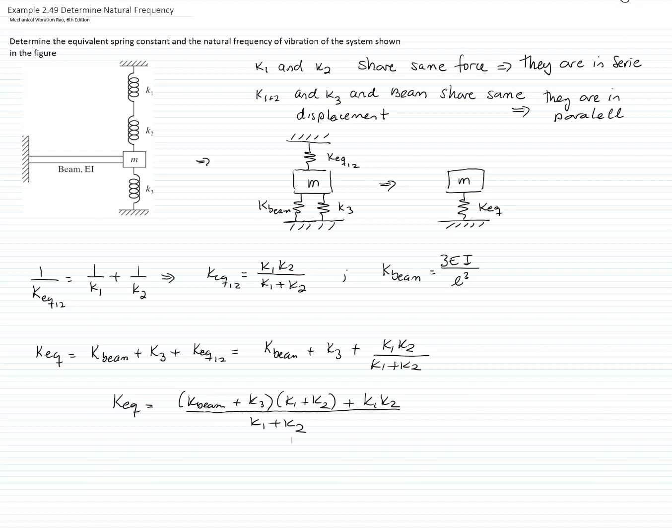The natural frequency is defined as the square root of the constant of the spring or equivalent constant of the spring divided by the mass. If we substitute what we obtain for the equivalent constant of the spring, we will have the following expression. And this is how we found the natural frequency of this system.